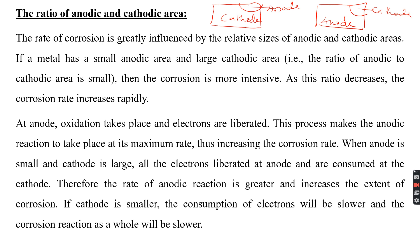The metal with a smaller anode and larger cathode undergoes faster corrosion. In the case of a small anode, metal is lost as metal ions, liberating electrons that migrate towards the cathode. The large cathodic area facilitates the reduction process — hydroxyl ions are formed and combine with ferrous ions at a faster rate. As the ratio of anodic to cathodic area decreases, the rate of corrosion is high and more intense. As the ratio decreases, the corrosion rate increases rapidly.